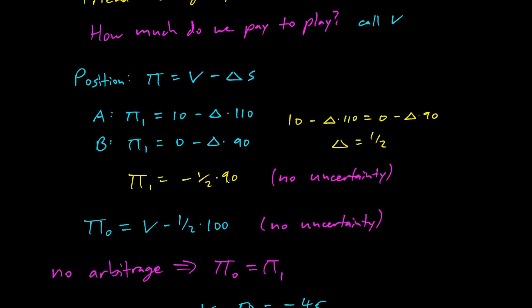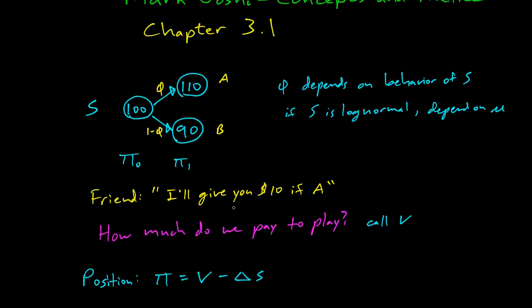So, of course, all this notation is suggestive to show that this is option pricing, but this isn't even an option price. This is like so simple. It's two states and a probability going to the states.